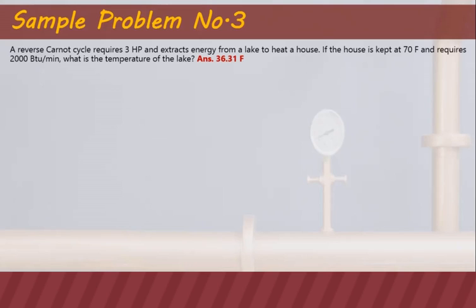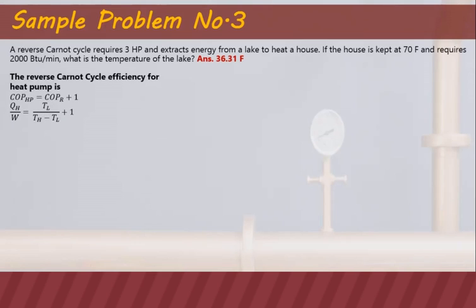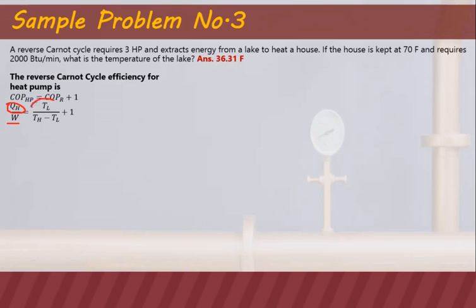The formula for heat pump COP is: COP of the heat pump equals COP of the refrigerator plus one. The COP of the heat pump is written as the ratio of the desired output, which is QH (to heat the house), over the power input W. This equals TL over (TH minus TL) plus one.